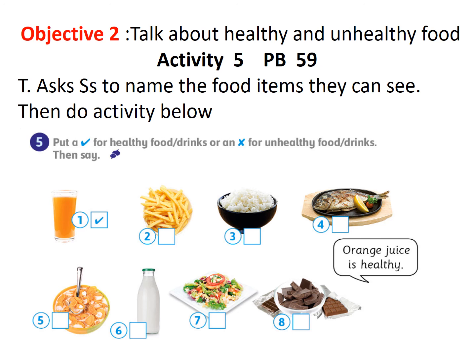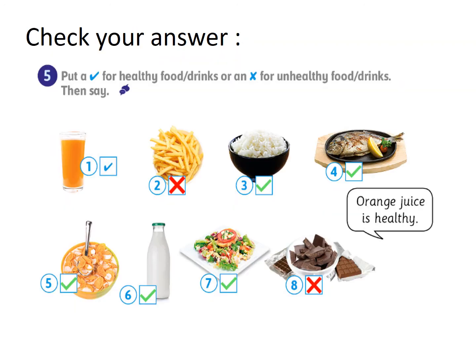Put a tick for healthy food or drinks and a cross for unhealthy food. Look and do the same as number one. Chips: unhealthy. Rice: healthy. Fish: healthy. You can do the rest in the same way. Let me check your answers: number one, true/healthy; number two, false/unhealthy; number three, healthy; number four, healthy; number five, healthy; number six, healthy; number seven, healthy; number eight, unhealthy. Very good — this objective has been done.